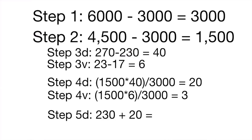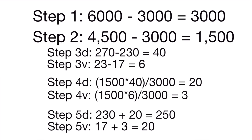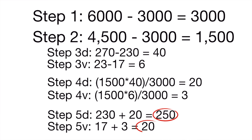Finally, since the resulting values go from low to high for both direction and velocity, we'll add the results to the first resulting value. So 230 plus 20 equals a direction of 250, and 17 plus 3 equals a velocity of 20. The final result is that the winds should be out of 250 at 20 knots.